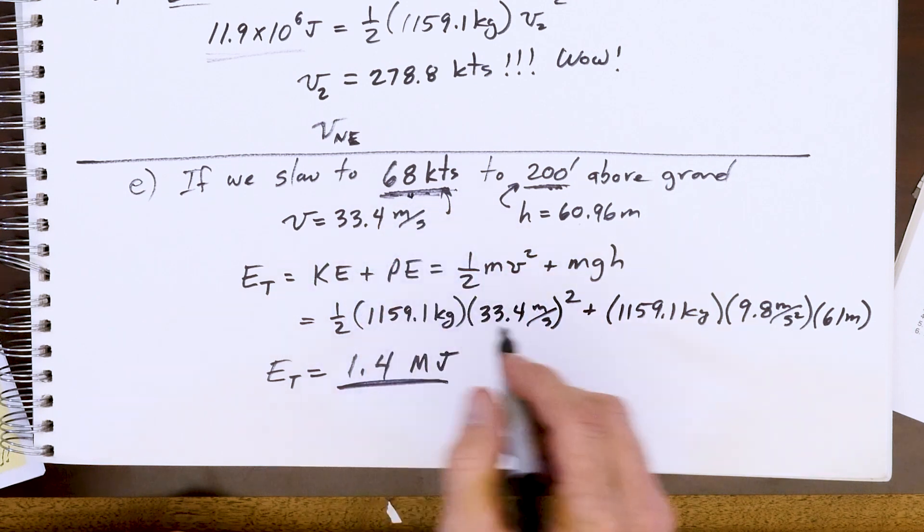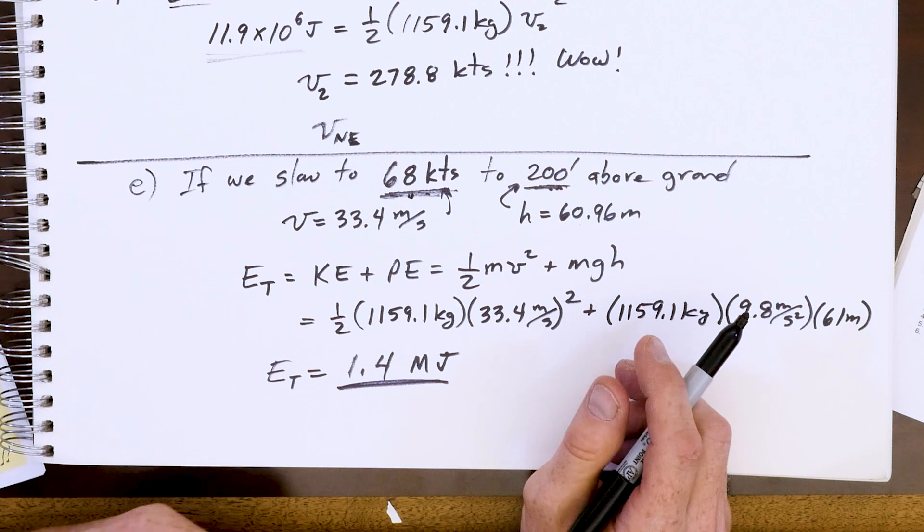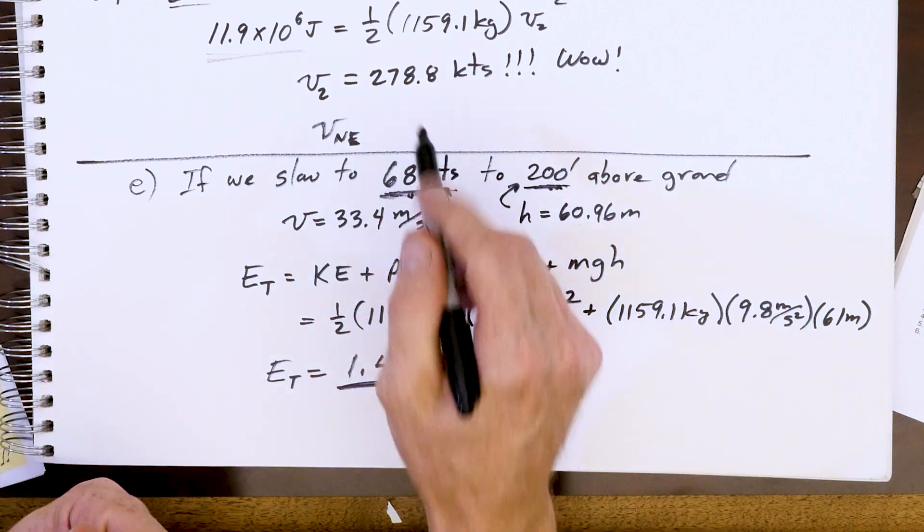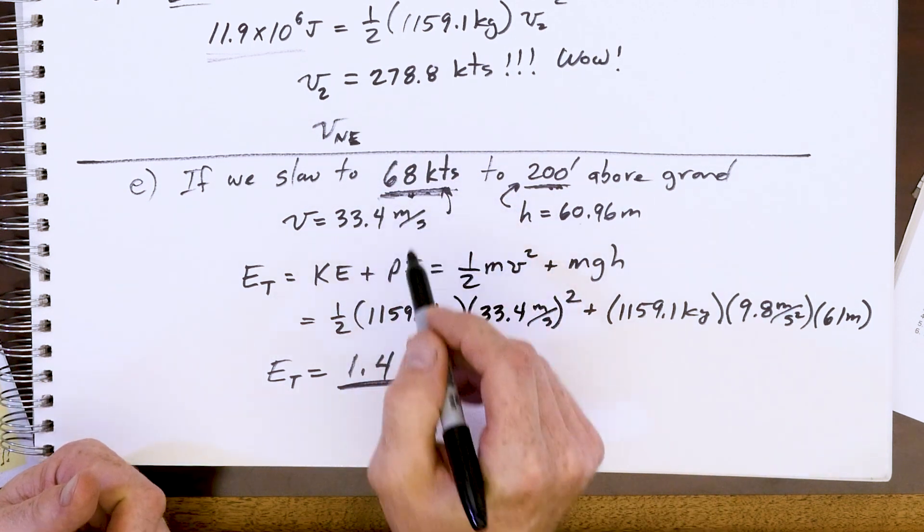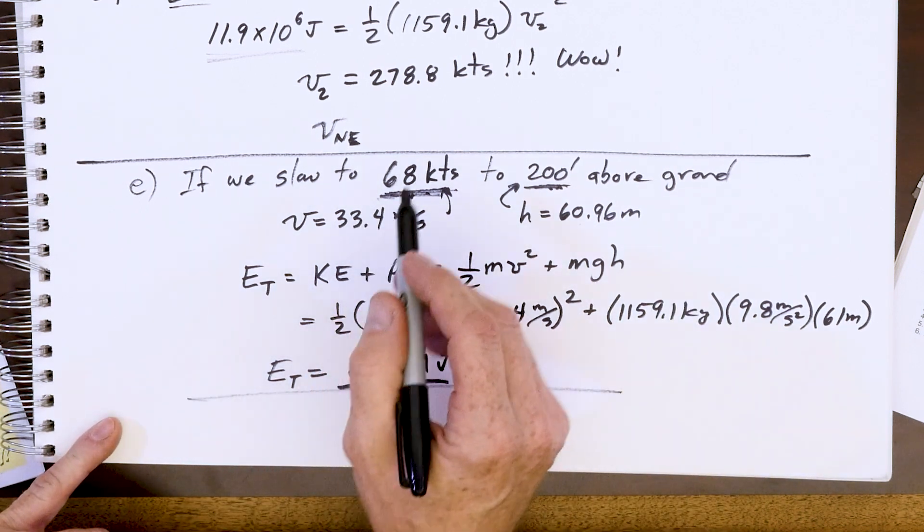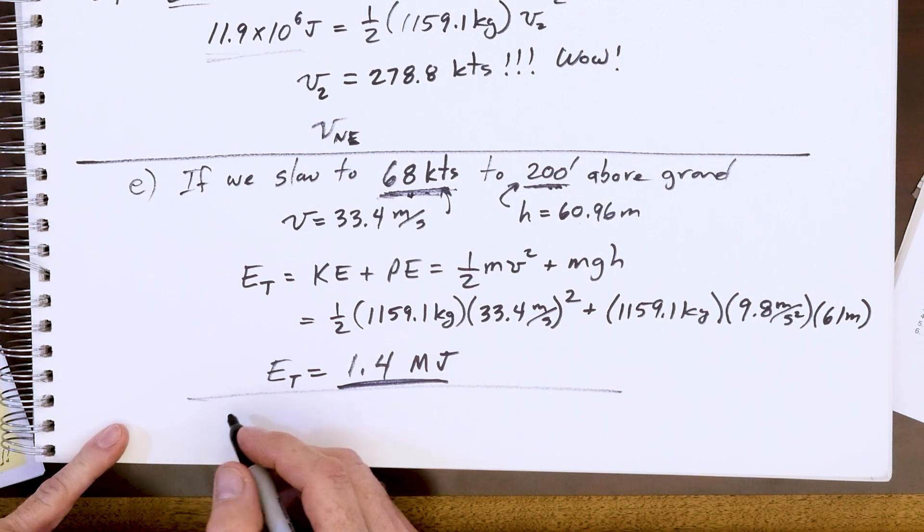These Cessnas are gliding machines. The research shows that people who stay calm on the radio, they have good radio calls – mayday, mayday, mayday – they give a position report, they're also going to do a better job of staying at 68 knots and reaching the field and having a nice smooth landing. So what was my question then? How much energy was lost to drag?